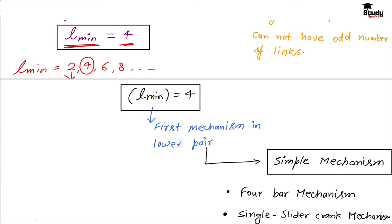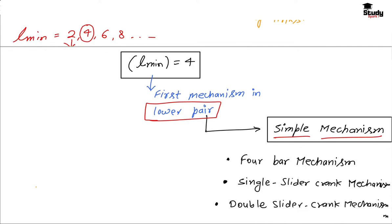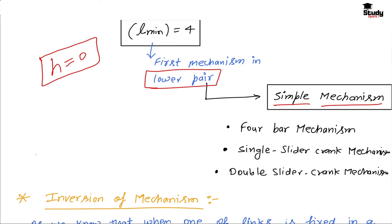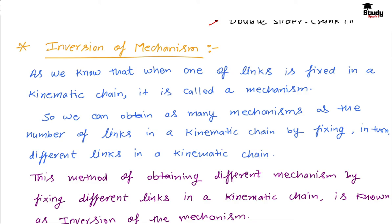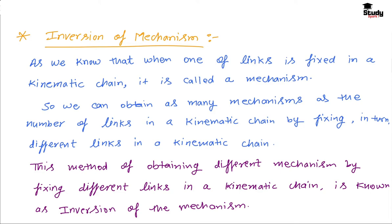By using 4 links we prepare the first mechanism using lower pairs, known as a simple mechanism. We have three different types: the four-bar mechanism, single slider crank mechanism, and double slider crank mechanism. But first we have to cover a very important topic: inversion of mechanism. When one of the links is fixed in a kinematic chain, then it is called a mechanism.